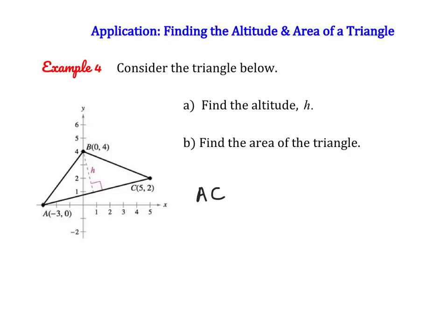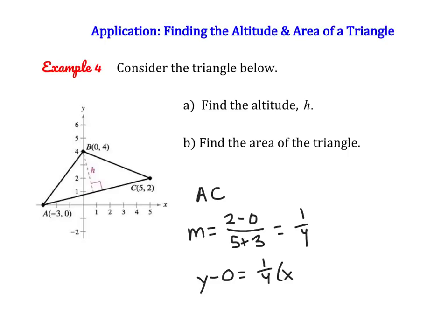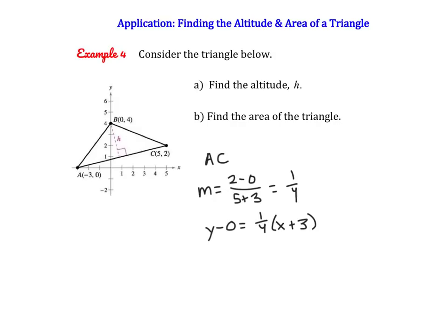For line AC, we first find the slope using the slope formula: 2 over 0 over 5 plus 3 equals 2 over 8, which is 1 fourth. Using point-slope form, y minus 0 equals 1 fourth times x plus 3. To clear the fraction, multiply everything by 4: 4y equals x plus 3. Putting it in general form: x minus 4y plus 3 equals 0.